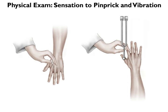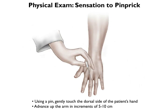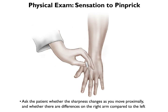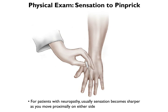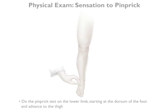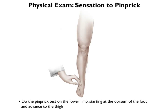Next, check sensation to pinprick and vibration. Using a pin, gently touch the dorsal side of the patient's hand and advance up the arm in increments of about 5 to 10 centimeters. Ask the patient whether the sensation of sharpness changes as you move proximally and whether there are differences on the right arm compared to the left. For patients with neuropathy, usually the sensation becomes sharper as you move proximally on either side. Do the same thing in the lower limb, starting at the dorsal of the foot and advancing to the thigh.